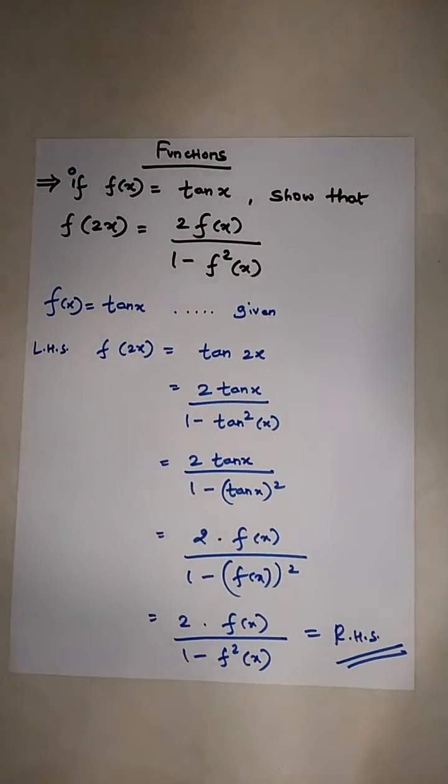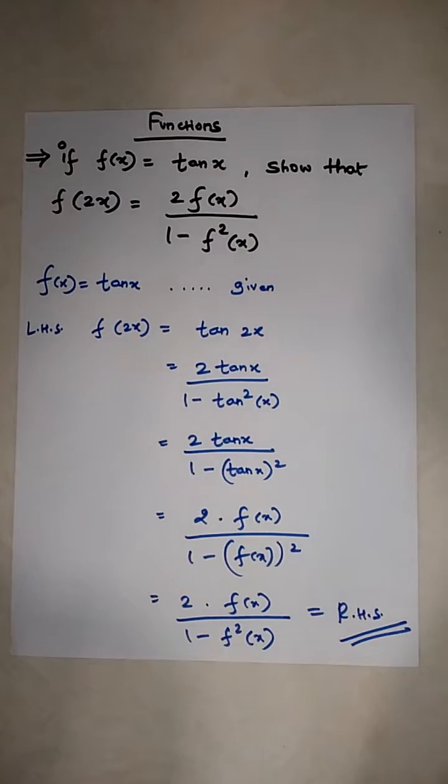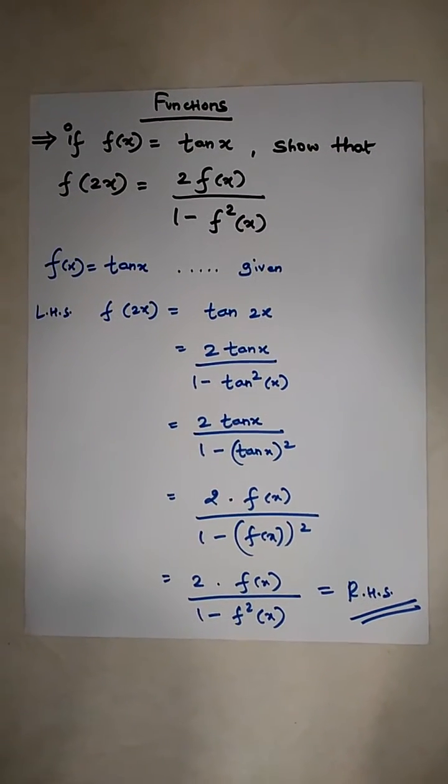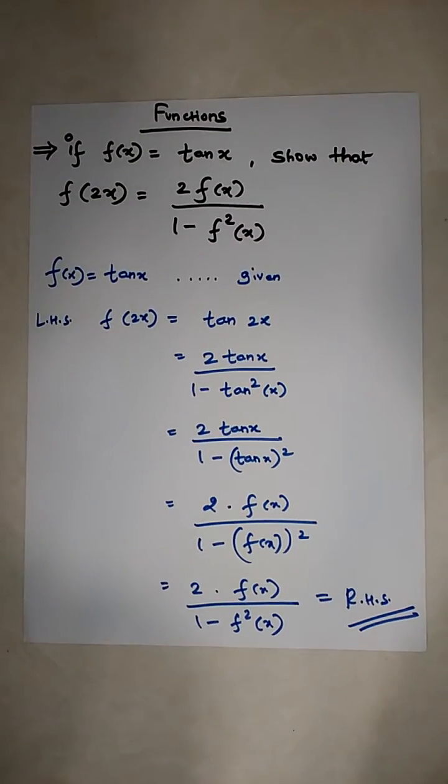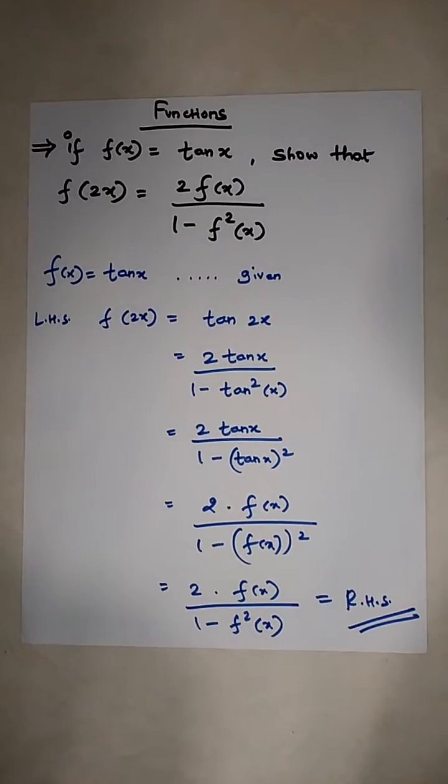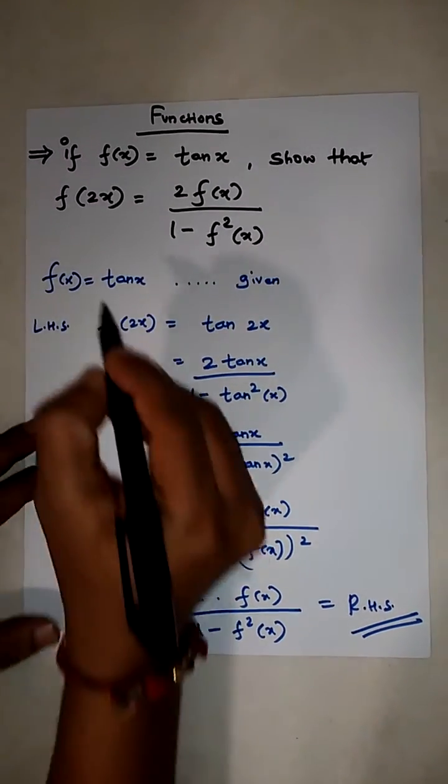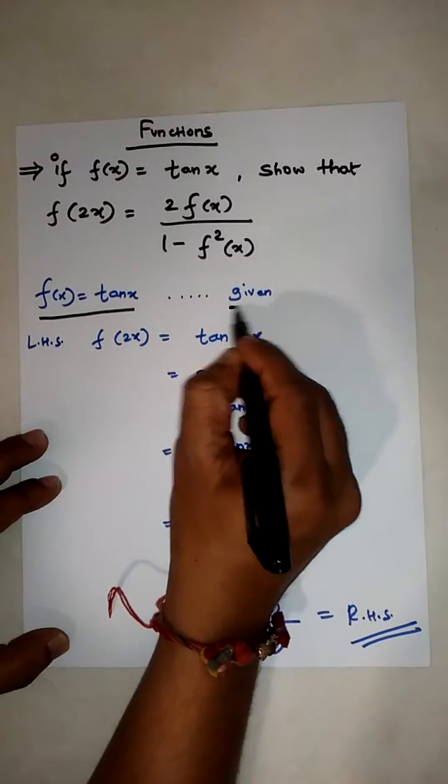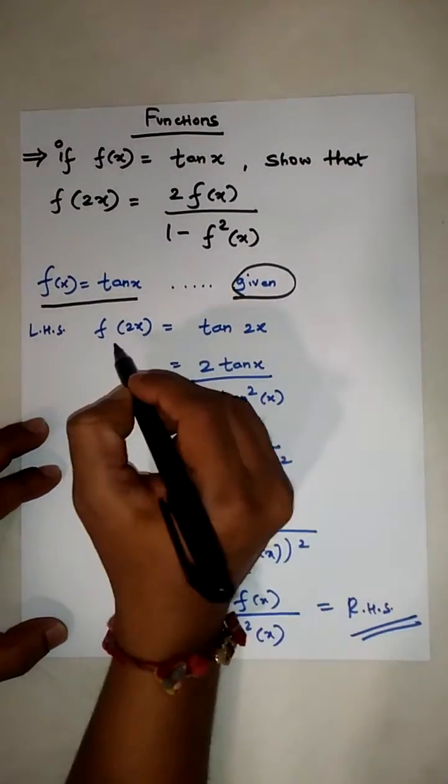If f(x) is equal to tanx, show that f(2x) is equal to 2f(x) over 1 minus f²(x). Now, f(x) equals tanx, which is given. So, left hand side: